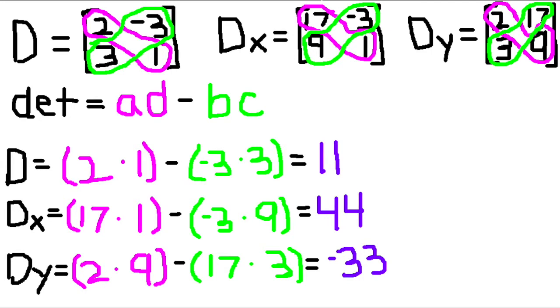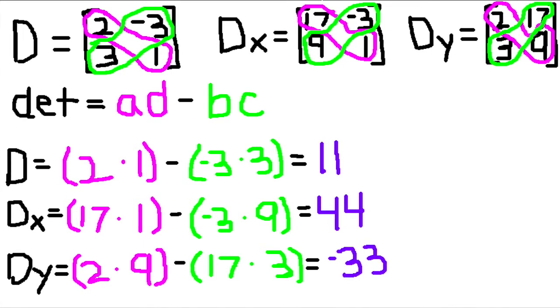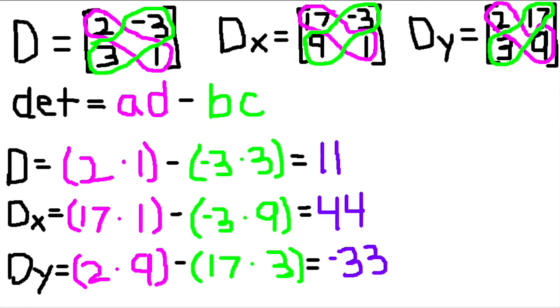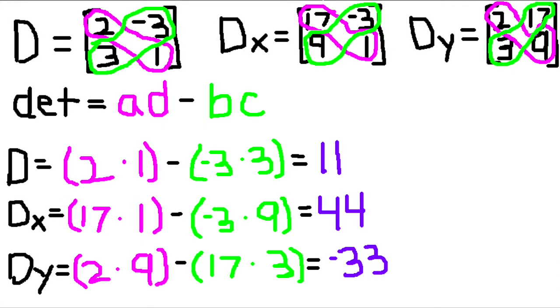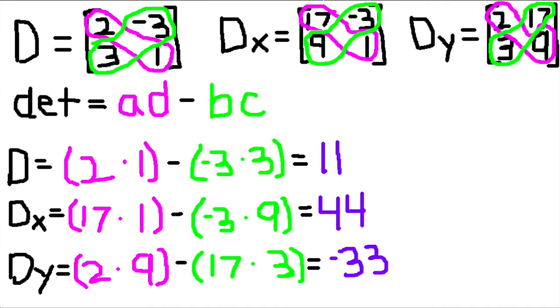This shows the math we've done, which is AD minus BC for each matrix. D equals 11, dx equals 44, and dy equals negative 33. Those are the determinants.